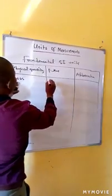The first prefix is mega, symbol M, which is 10 to the power 6. We have kilo, symbol K, which is 10 to the power 3.